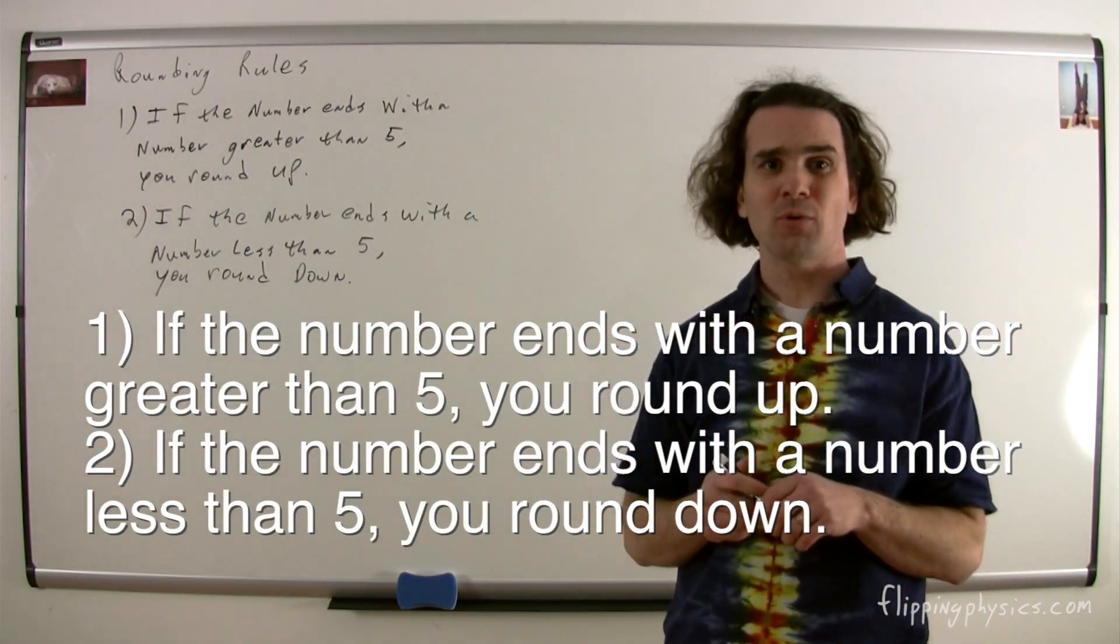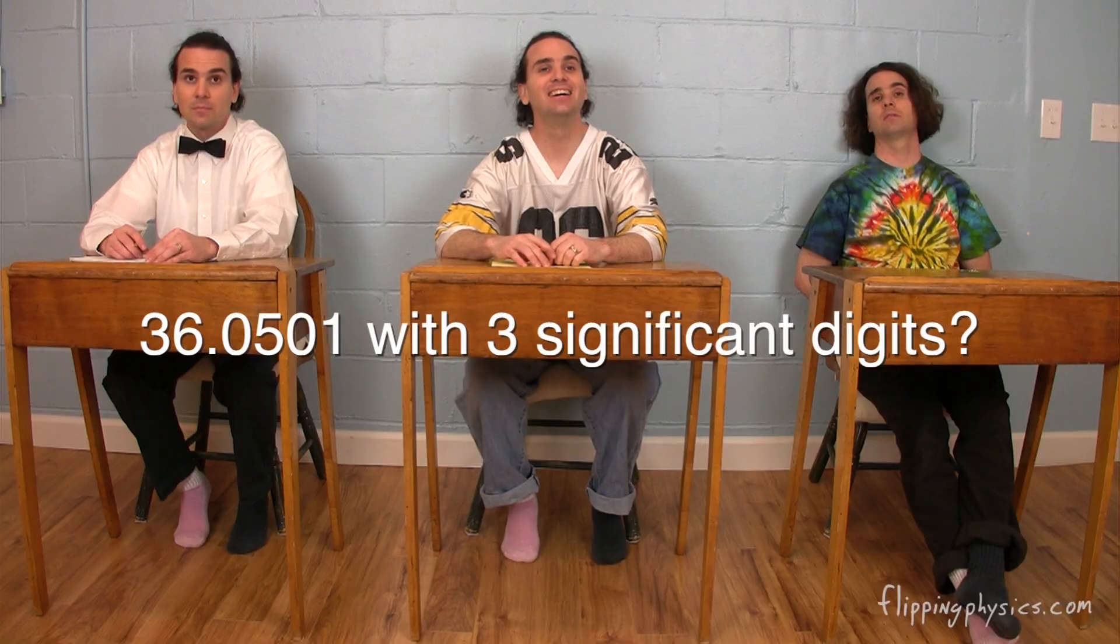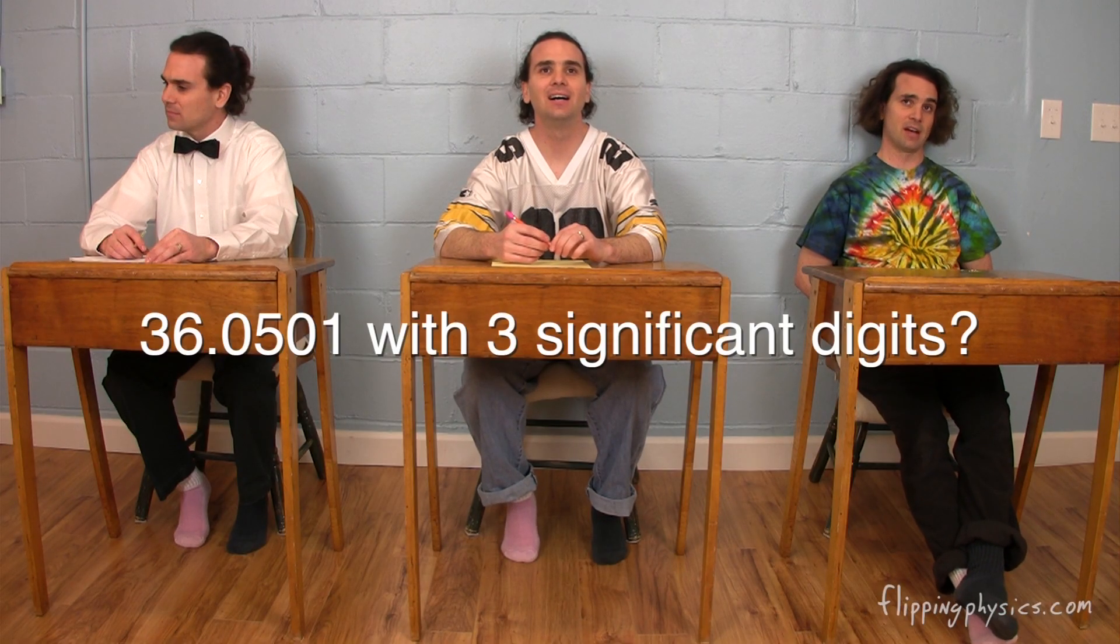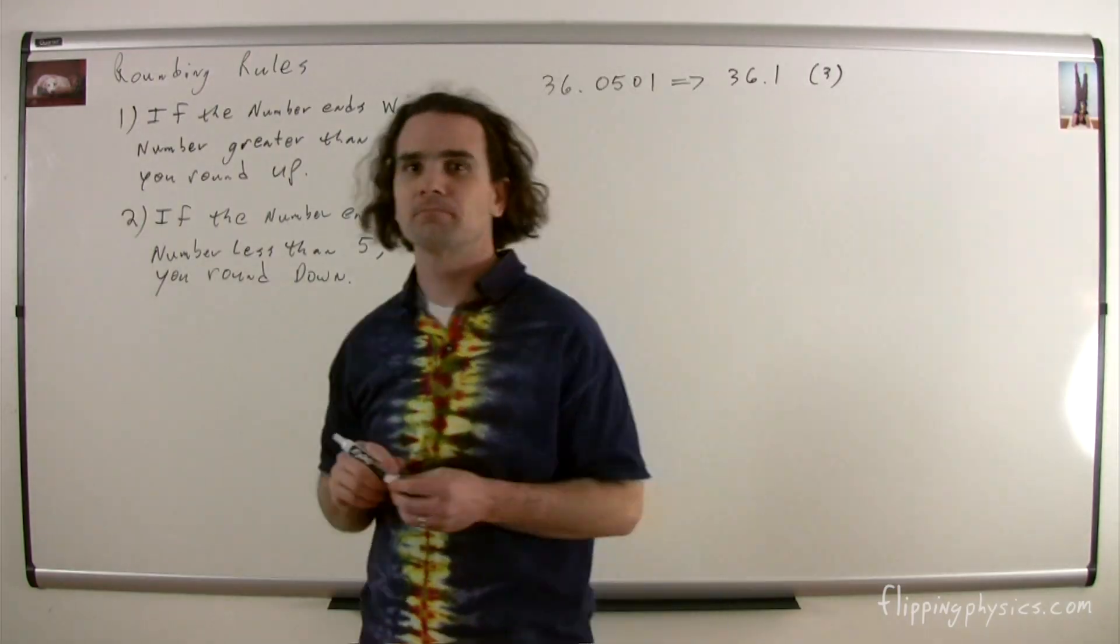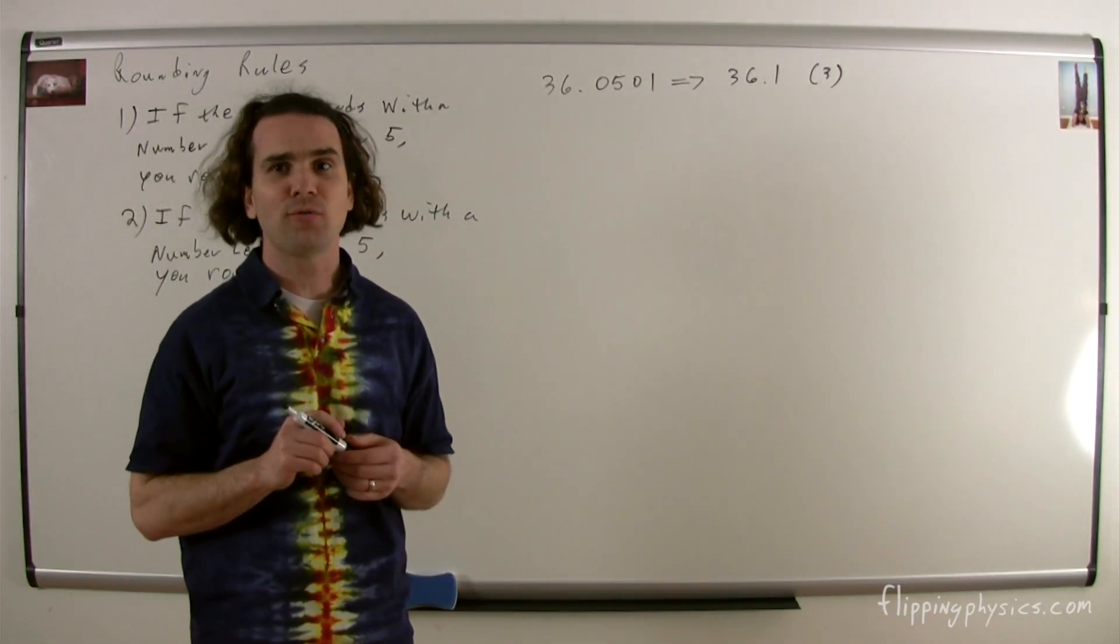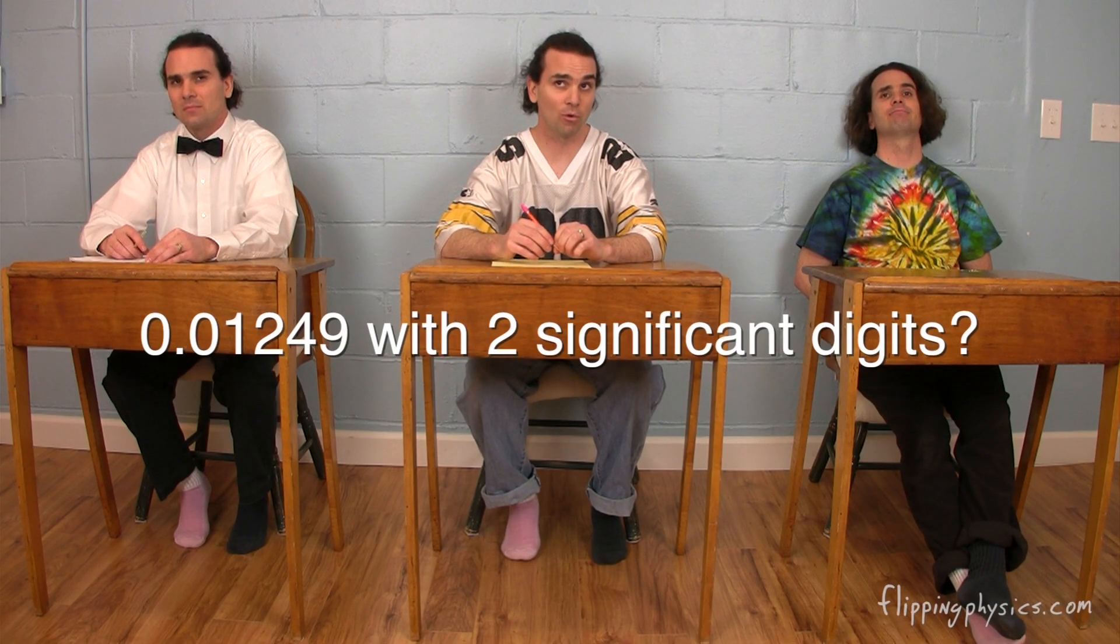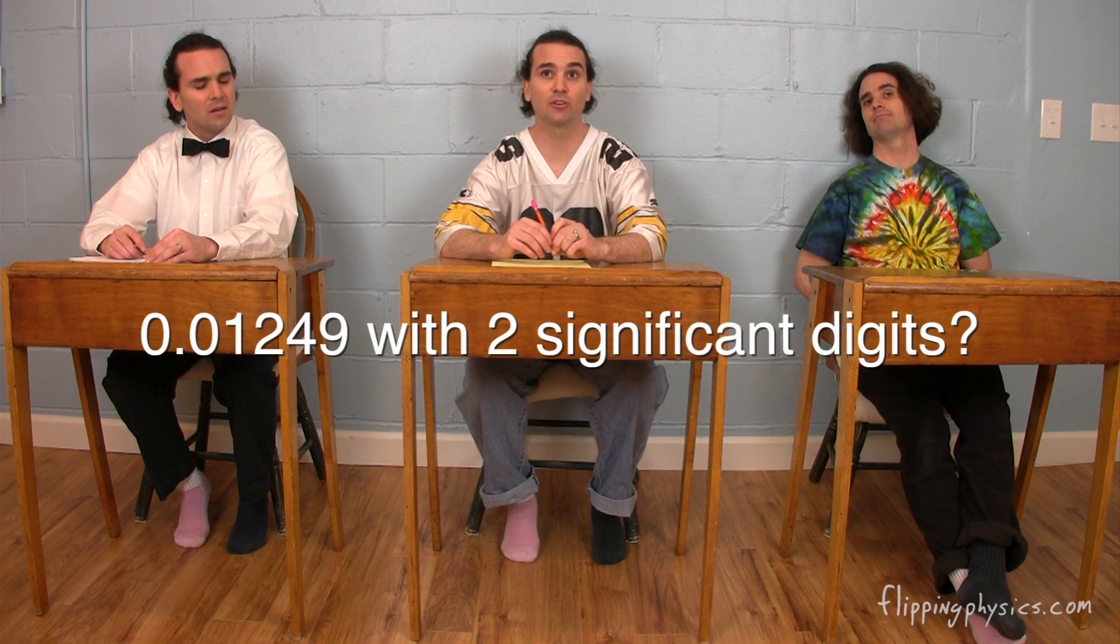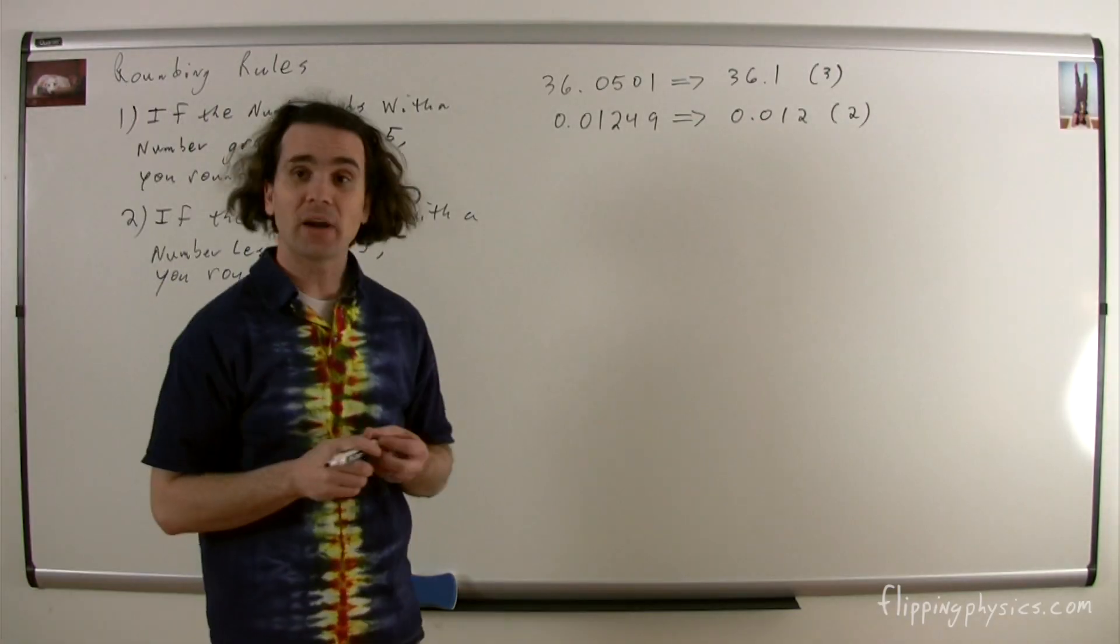Bo, please round 36.0501 to three significant digits. Well, the number ends in 501, which is greater than 5, so we round up to 36.1. Great. Bobby, please round 0.01249 to two significant digits. Because the number ends in 49, which is less than 5, then we round down to 0.012. Great.